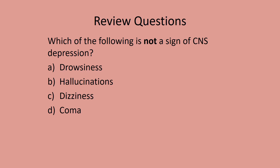Review question: which of the following is not a sign of central nervous system depression? Drowsiness — going down; dizziness — going down; coma — already down and out. The only one that is not depressive is hallucination, which is caused by a central nervous system stimulant.